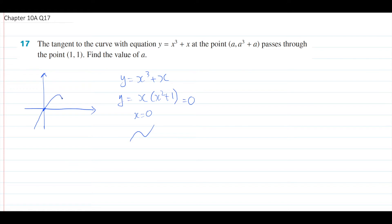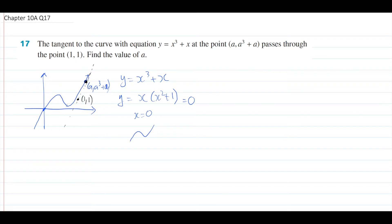The graph goes up, must come back down because it's a cubic, but because there's only one x-intercept it cannot go lower than the x-axis. So it dips but then goes back up - that's just a bit of visualization, more for your general knowledge than for solving this question, but it's good to know. On our cubic graph we have the point (a, a cubed plus a) - don't know exactly where that is, could be anywhere - so I'll just put a random point. And if I draw a tangent to the curve at that point, this tangent also crosses the point (1, 1).